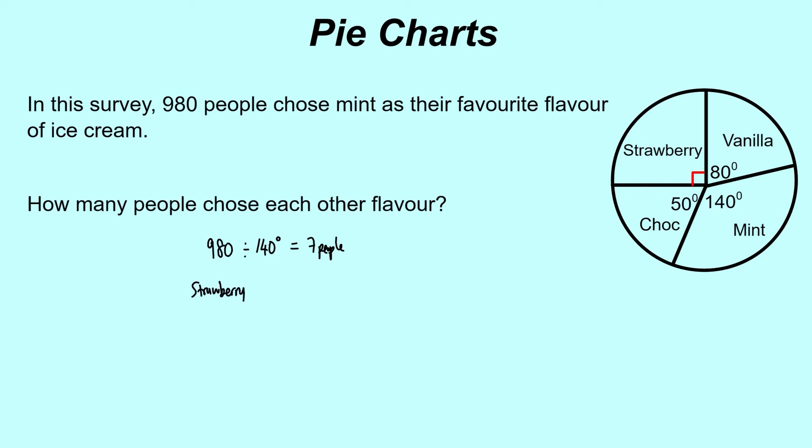Let's say we stick with strawberry. We want to find out how many people chose strawberry. Strawberry represents 90 degrees or a quarter of the pie chart, and it's not a quarter of 980. We're going to take the 980, divide it by the 140 to give us one degree, and then multiply by 90 to give us the number of people who chose strawberry. So 980 divided by 140 times 90, and that gives us 630. So 630 people chose strawberry.